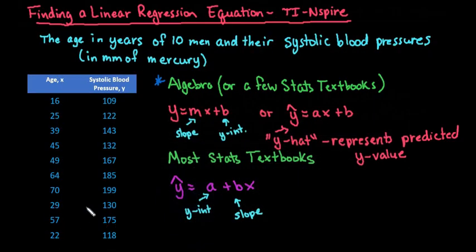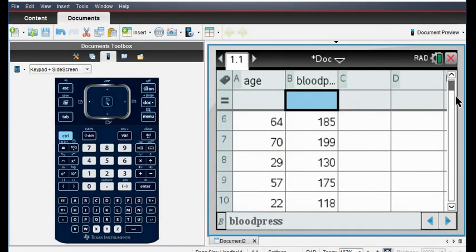So like the 22, 118, 57, 175. It is very important that these line up with each other. Like if I put 16 with 122, it's going to throw off the whole analysis. So you do want to make sure that the 16 and the 109, and the 25 and the 122, etc., are lined up correctly, because otherwise you will get the wrong equation.